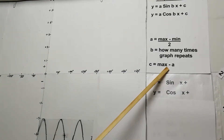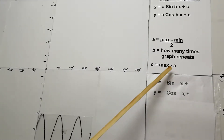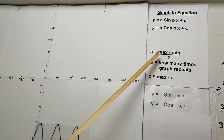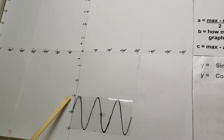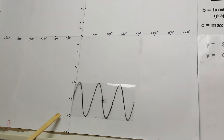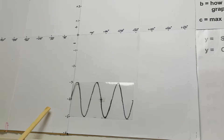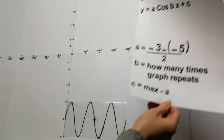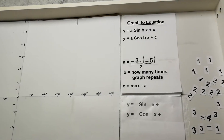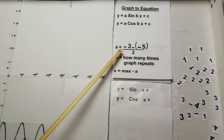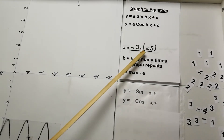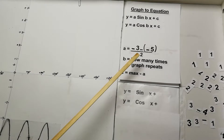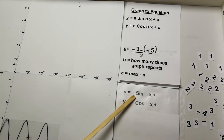Looking at the a value first: on this graph the maximum is negative 3 and the minimum is negative 5. So we do negative 3 minus negative 5, which becomes negative 3 plus 5 = 2, and dividing by 2 gives us 1. So the a value is 1.